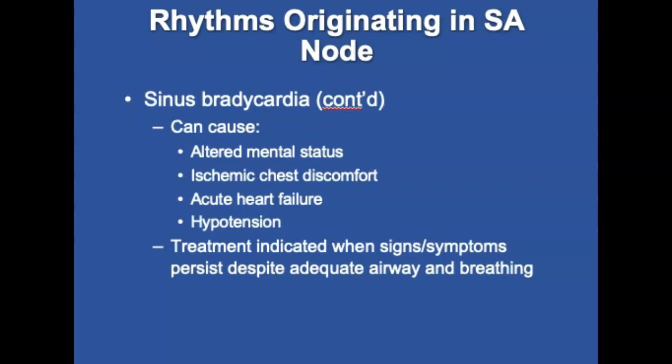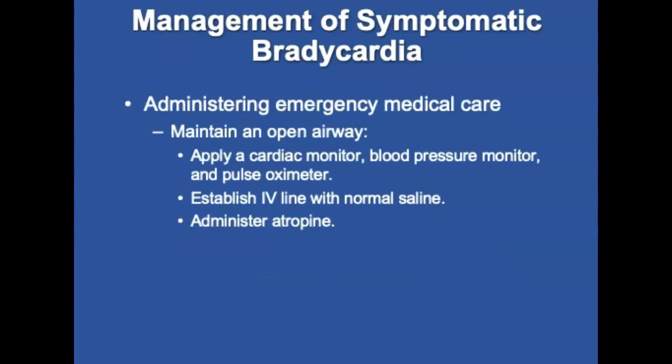Treatment is indicated when signs and symptoms persist despite adequate oxygen and breathing. Goals for management include adequate oxygenation, ventilation, and perfusion; correcting the rhythm disturbance; and restoring a stable perfusing rhythm. Search for the underlying cause, which may include hypoxia, hypothermia, shock, altered mental status, AV block, toxin exposure, electrolyte disorder, increased intracranial pressure, or other factors.